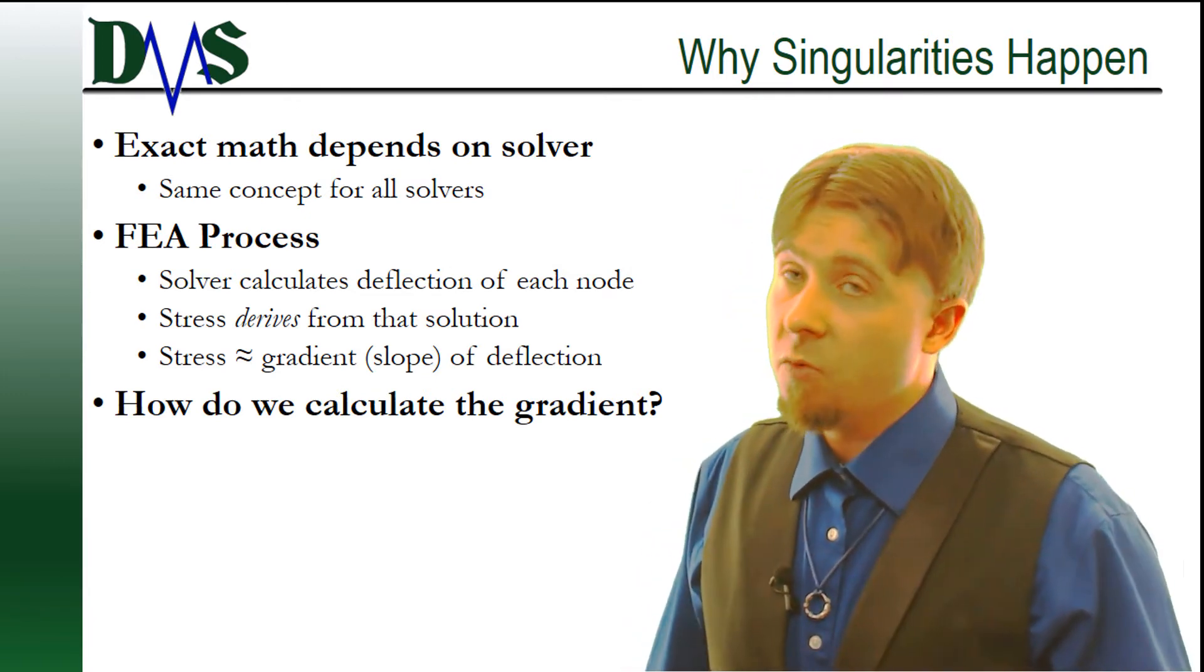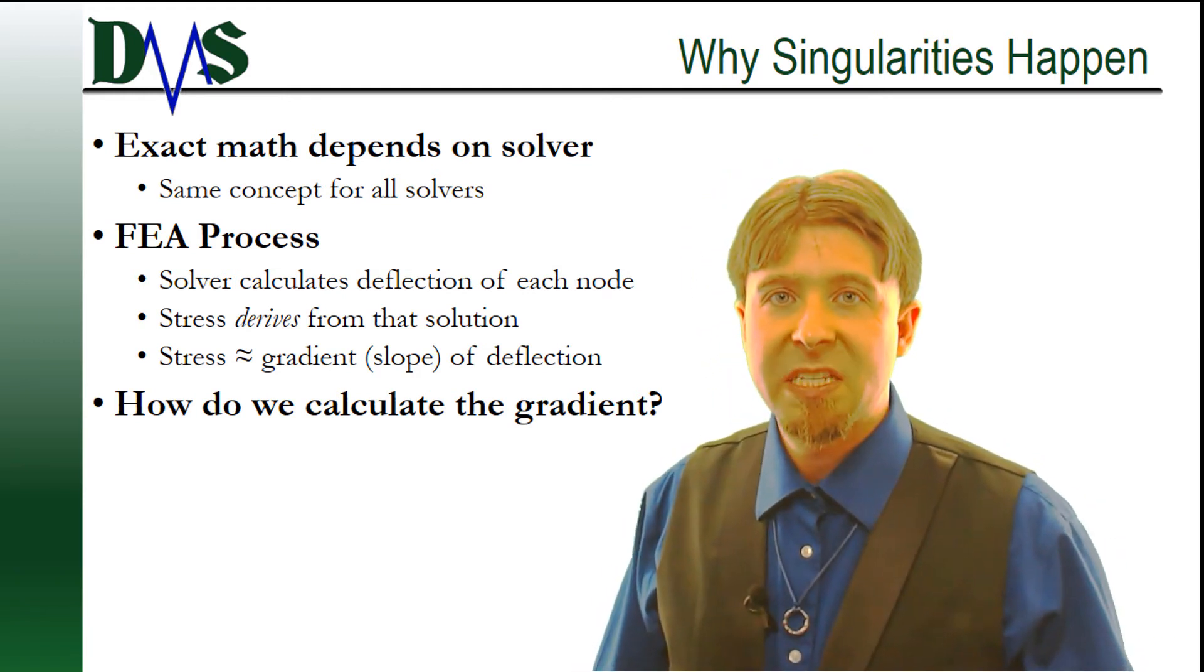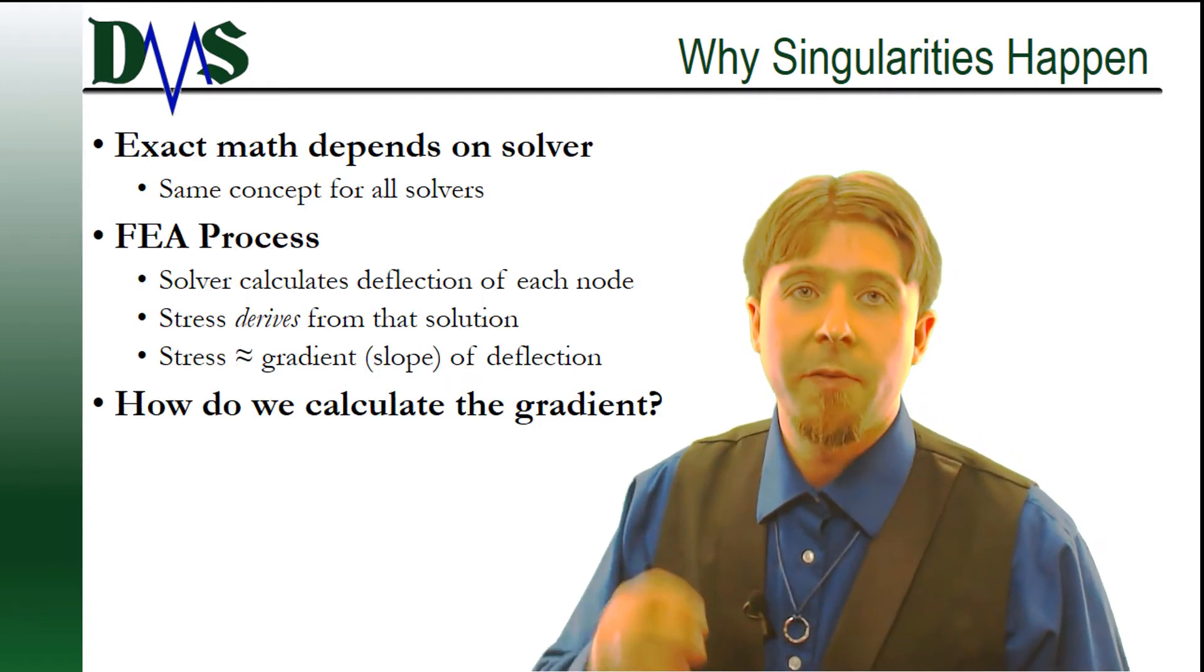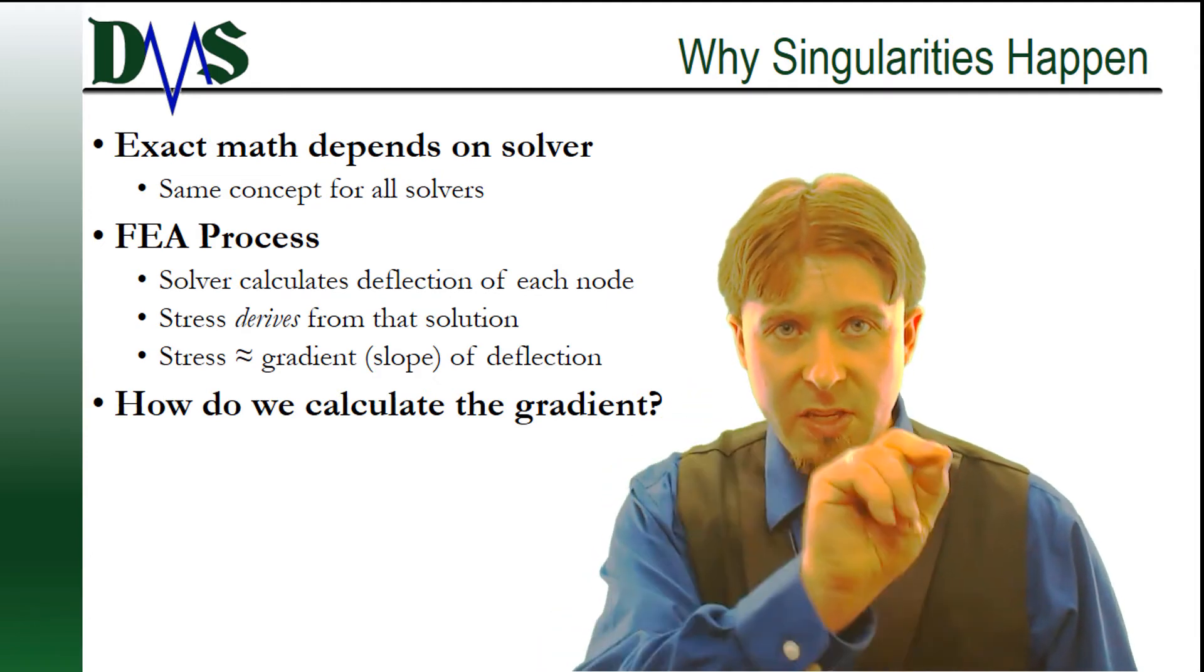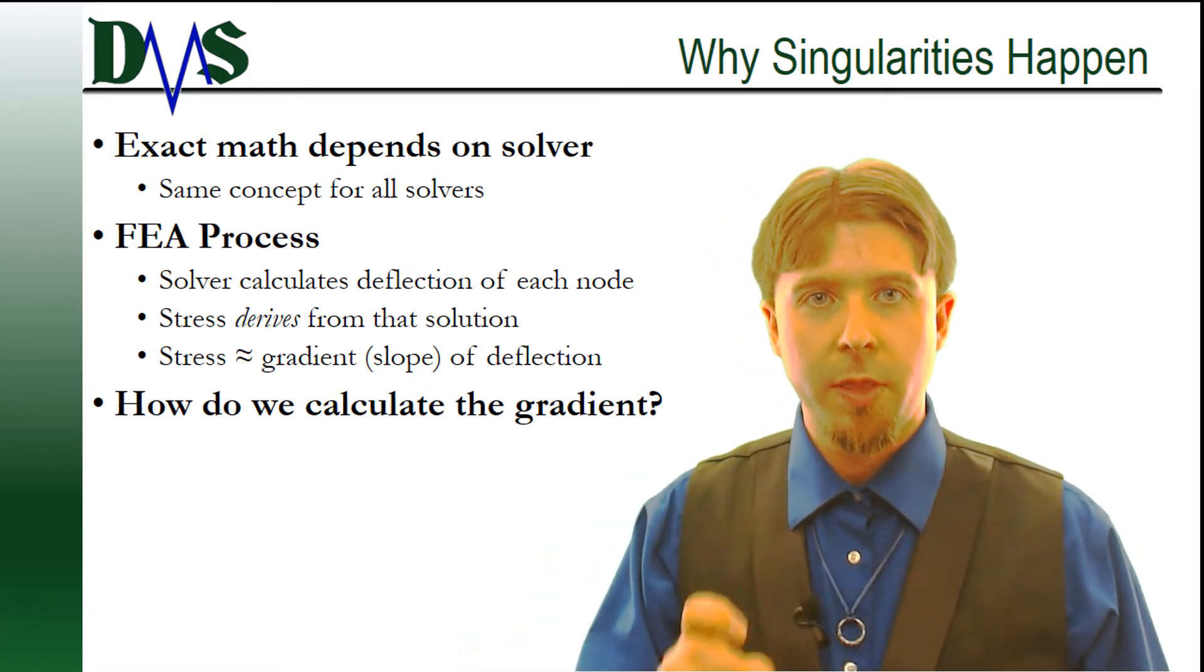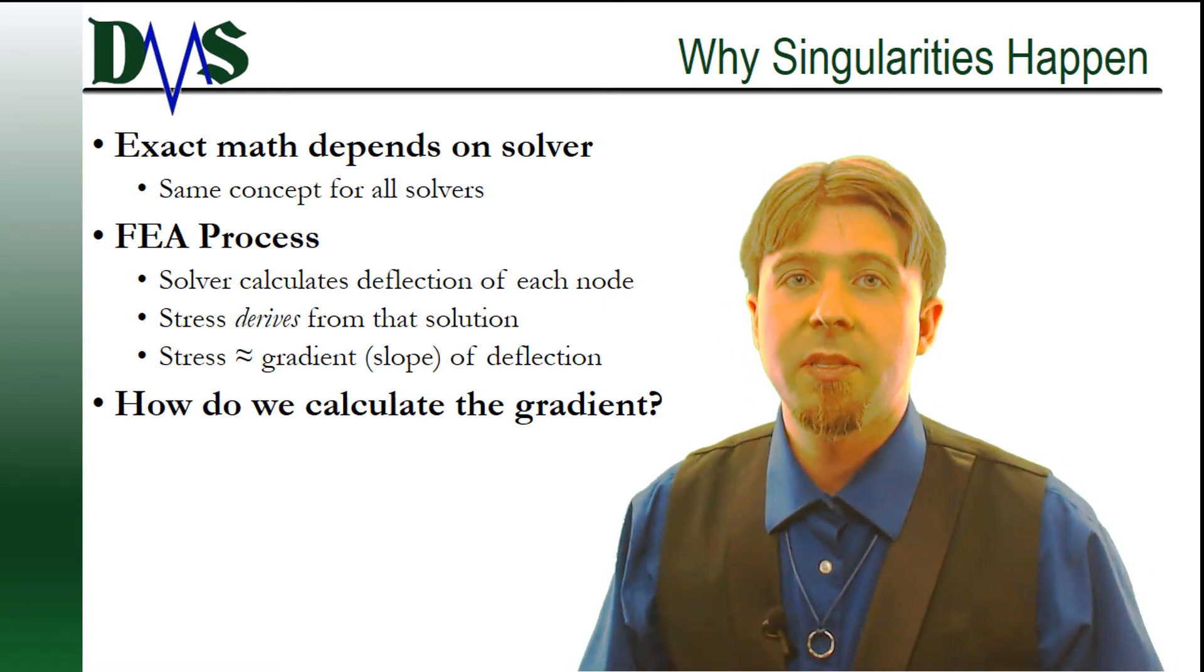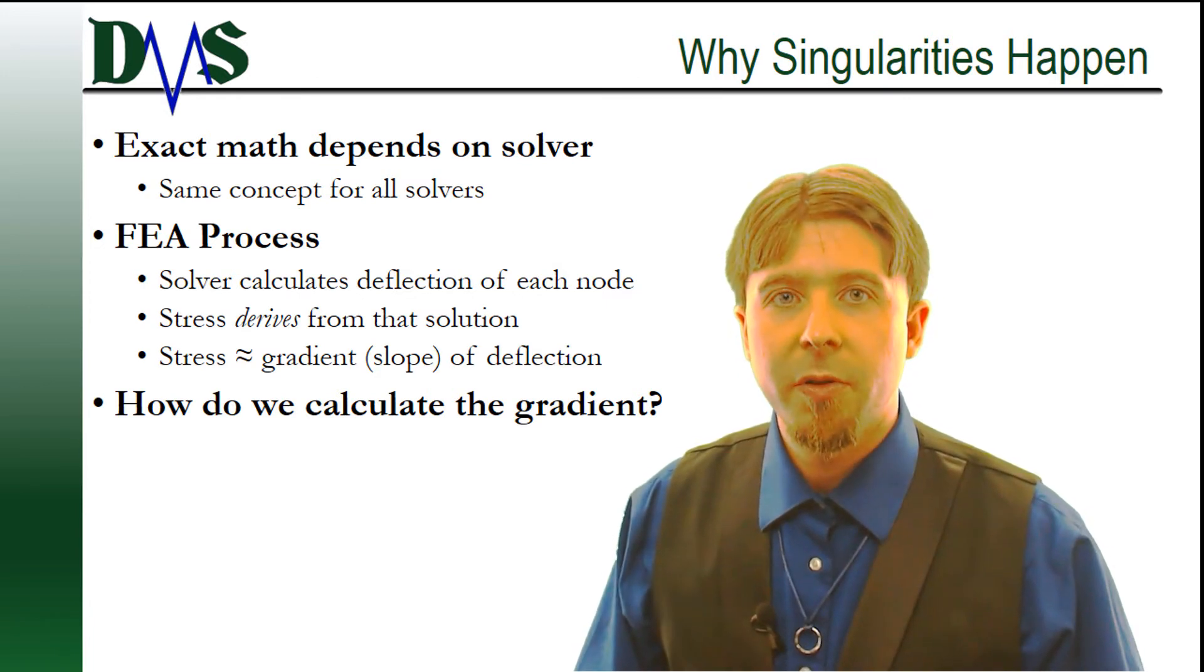Now I don't know about the rest of you, but when I want to ignore something, I feel a little more comfortable first understanding why it happens. This is going to be tough. To truly explain singularities, I need to first explain some of the math behind FEA. The FEA solver calculates the deflection of every node on the FEA mesh. That's the actual physical distance that each node moves under load.